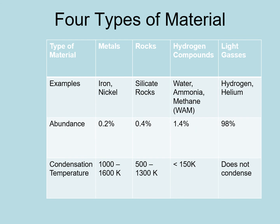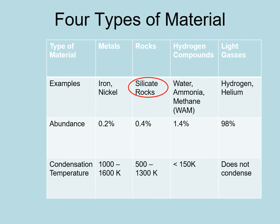The most common elements in the solar system divide into four major types of materials. Starting with the most abundant: light gases make up 98% of the disk's mass, representing the overwhelming majority of hydrogen and helium. Beside it are the hydrogen compounds — water, ammonia, and methane, or WAM for short — at just under one and a half percent. Next are rocks, or silicates, at less than half a percent. Finally, metals like iron and nickel come in at 0.2% of the disk.